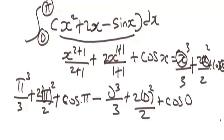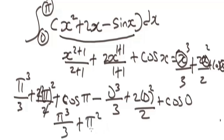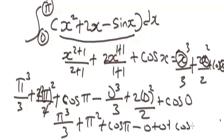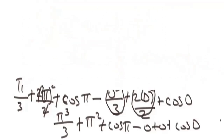Once you have done this, you simplify further. You are going to have pi to the power of 3 over 3, plus pi squared — because the 2 and 2 cancel — plus cos pi, minus the result for zero, which gives zero plus zero plus cos zero. Everything from the zero substitution gives you zero when you do the math.